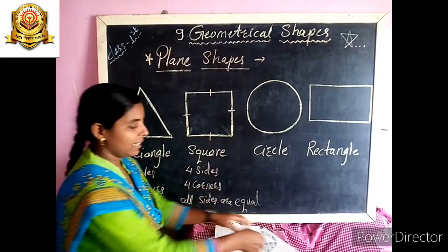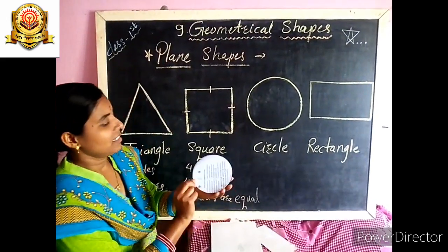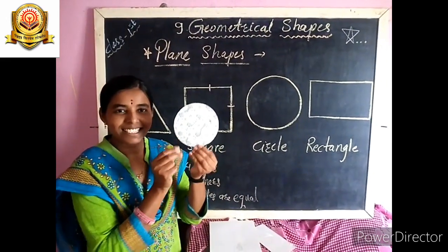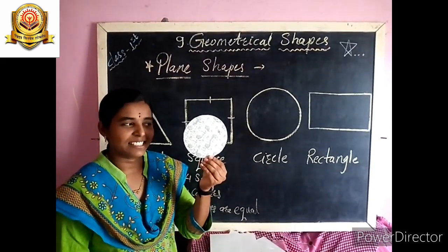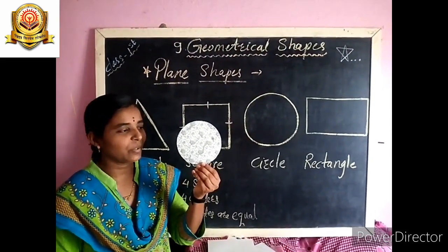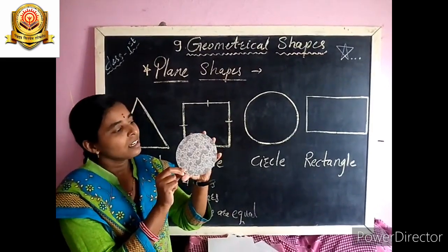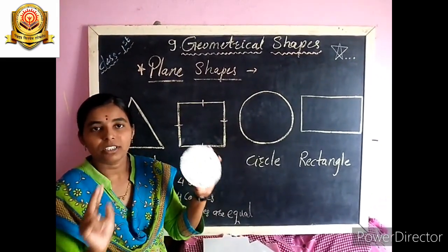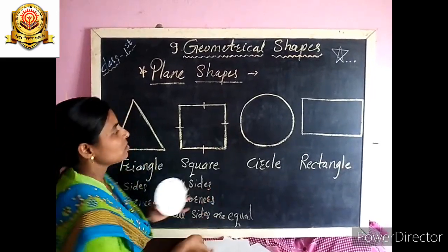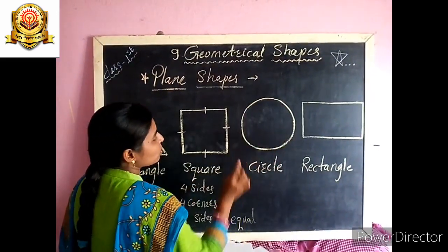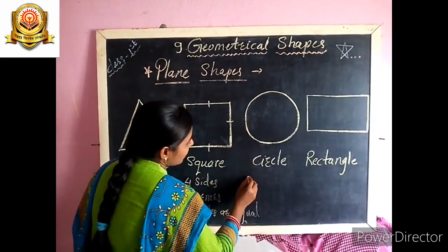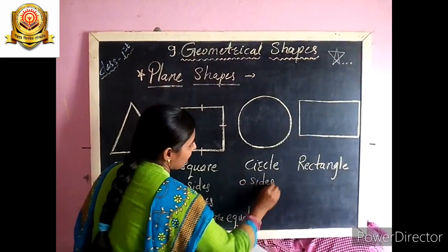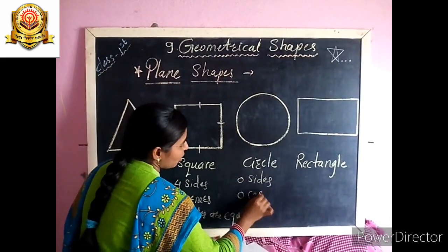Next, tell me, what is this? This is a circle. Very good. Circle has no sides and no corners — 0 sides and 0 corners.